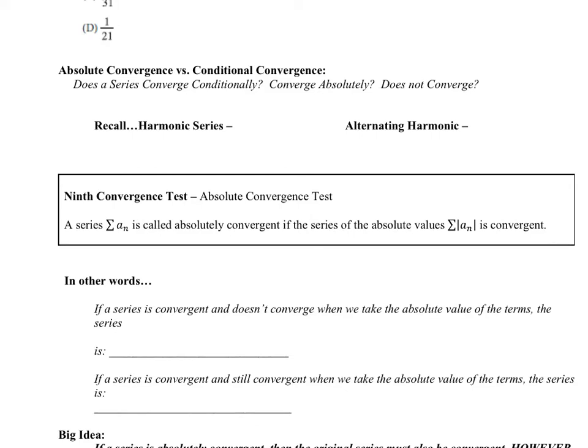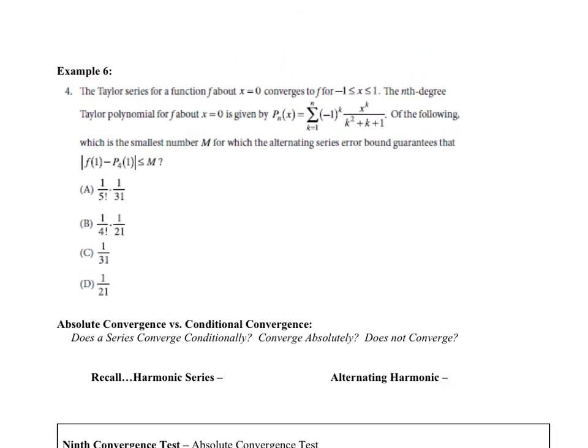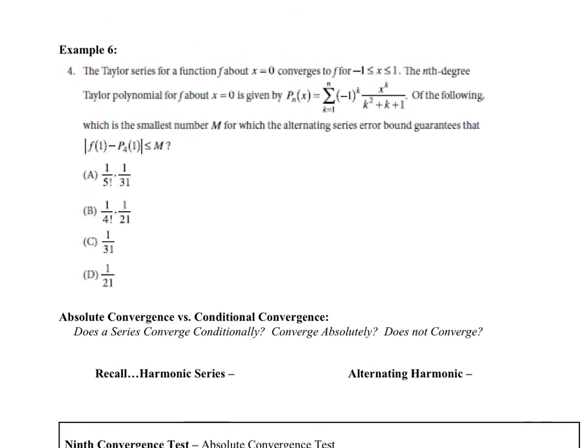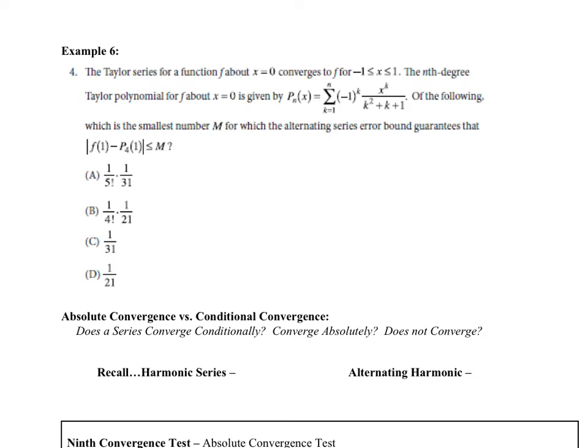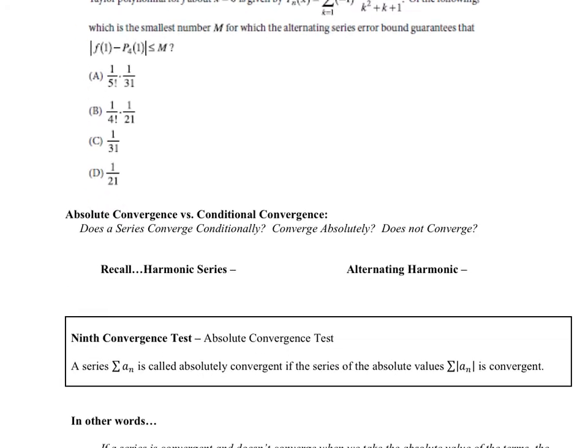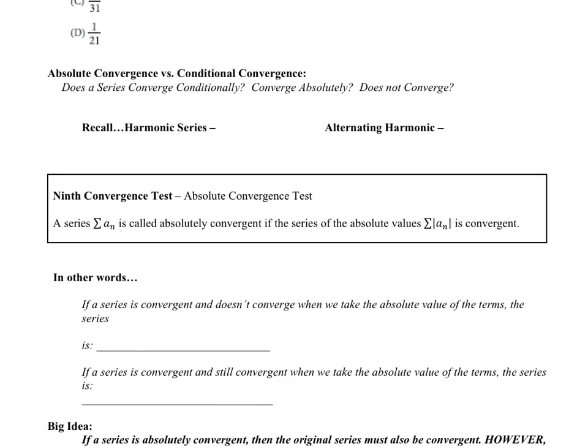Hello, BC Calculus students. This is Mr. Johnson, and we are in the second video for section 8.4. We're talking about the ninth convergence test, which is on absolute convergence, and this is on page 53. We did example number six in the last video, and now we're going to jump into this idea of absolute convergence.